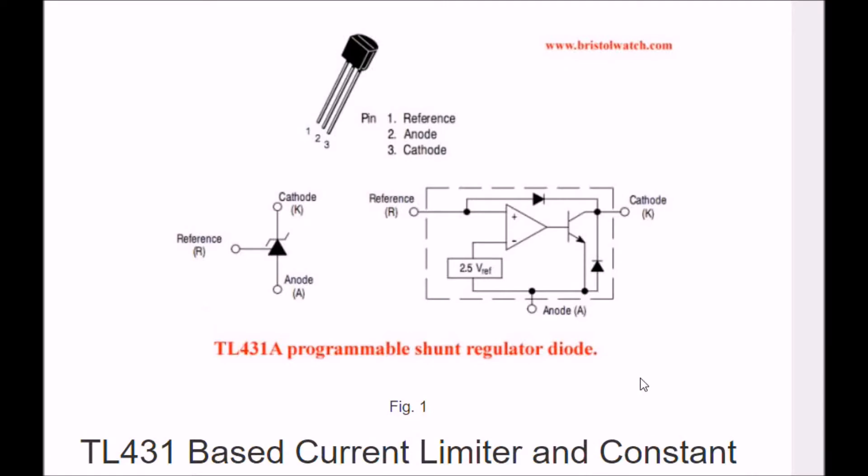Now, we're going to be using the TL431 programmable shunt regulator to build a constant current source. Briefly again, this is a three-pin device, has pin one reference, two anode, three cathode.